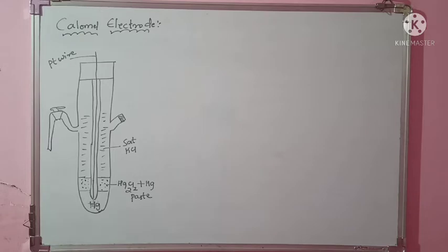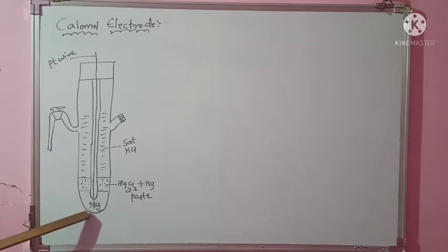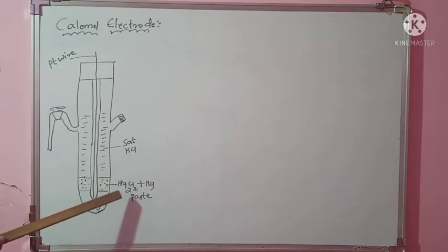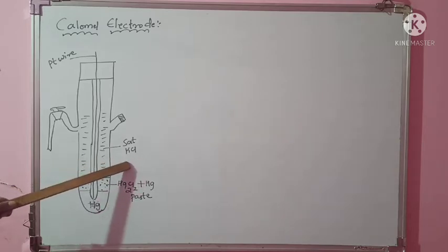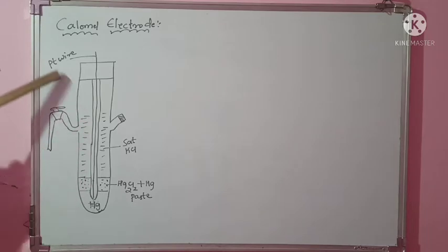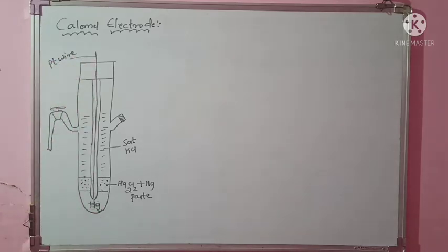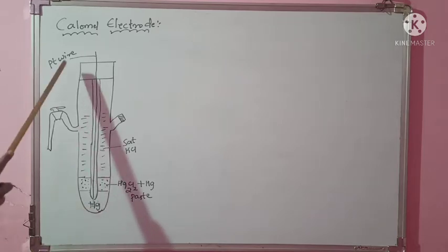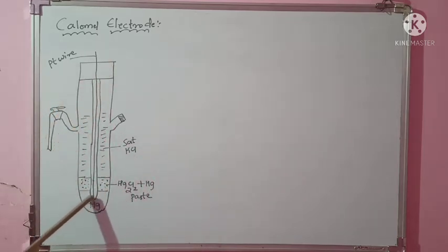First let us see what it consists of. Here you can see the calomel electrode consists of mercury, that is Hg, and also mercurous chloride that is Hg2Cl2, and mercury paste. It also consists of a saturated potassium chloride solution. It is very simple in construction, and you can see the platinum wire. This electrode can be easily set up in the laboratory because mercury of high degree purity is placed at the bottom of the glass tube.